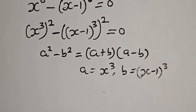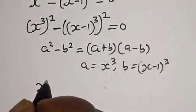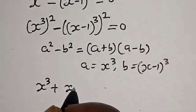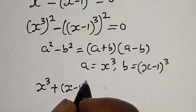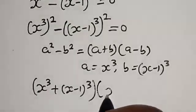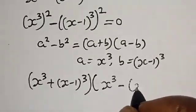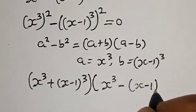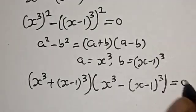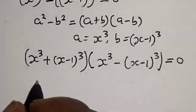Let's substitute. We have x raised to power 3 plus x minus 1 raised to power 3, multiplied by x raised to power 3 minus x minus 1 raised to power 3, is equal to 0.